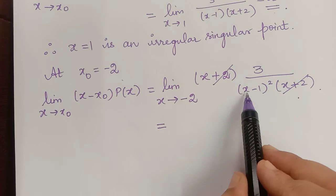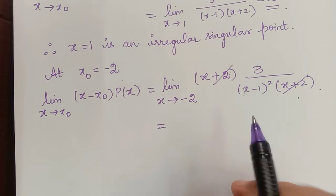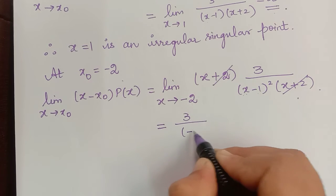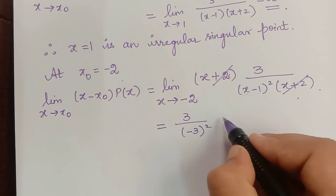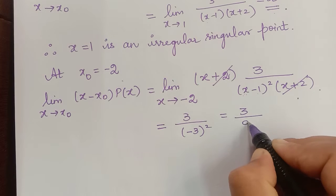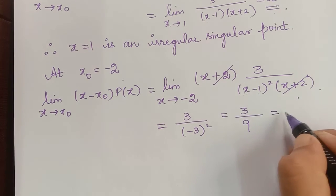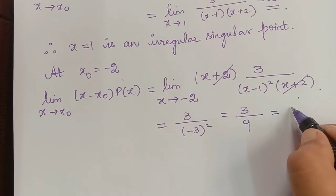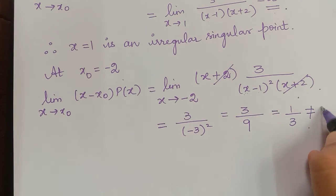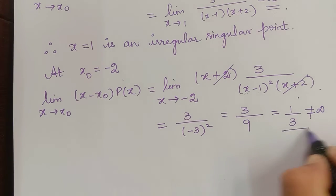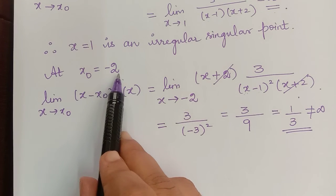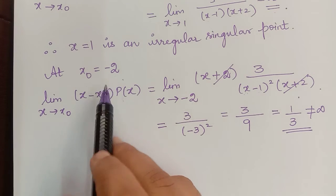So the limit as x tends to -2 of (x - x₀)·p(x) gives us: substituting x = -2, we get (-2 - 1) = -3, so the result is 3 / (-3)² = 3/9 = 1/3. This is not equal to infinity, so it is a finite value. Therefore, p(x) is analytic at the point x₀ = -2.